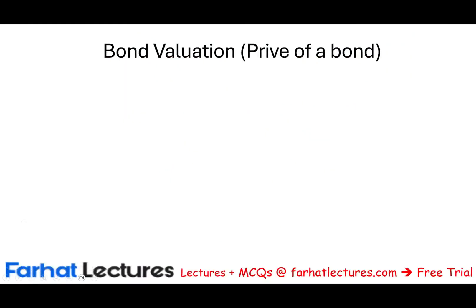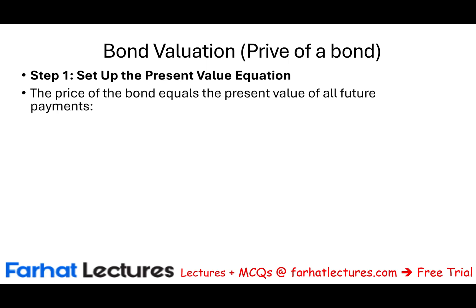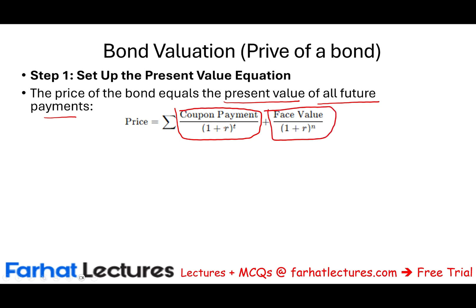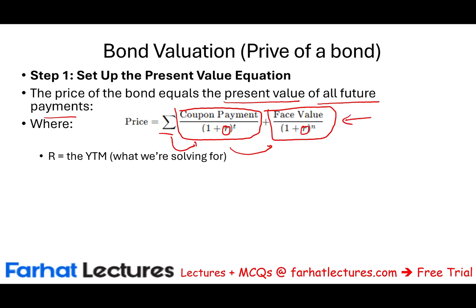I will walk you through the bond pricing step by step. First, let's set up the equation to find the bond price that we discussed in the prior session. Remember, the bond price equals the present value of all future payments — the present value of the coupon payments plus the present value of the face amount. The value of the bond is the sum of those two components. R is the yield to maturity — how much an investor would earn if they buy this bond and wait until the bond matures and they receive the face value.